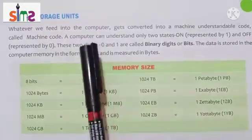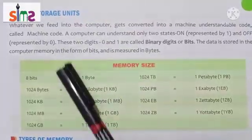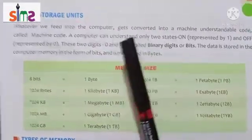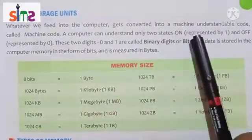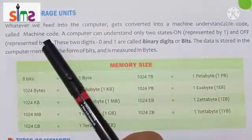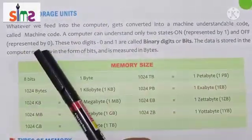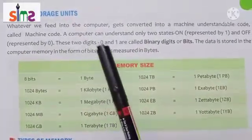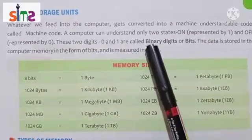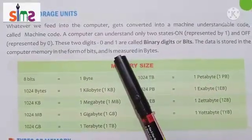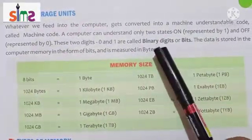We talk about computer language, which is binary language. The computer can understand only two states: on and off. On represents one, off represents zero. These two digits — 0 and 1 — are called binary digits, because the computer uses binary language.